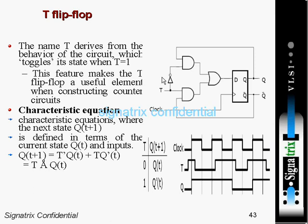The name T derives from the behavior of the circuit which toggles its state when T equals one. So whenever there is a one at the T input, the output will toggle. This feature makes the T flip-flop a useful element when constructing counter circuits, so if we need to implement a counter we can use the T flip-flop.